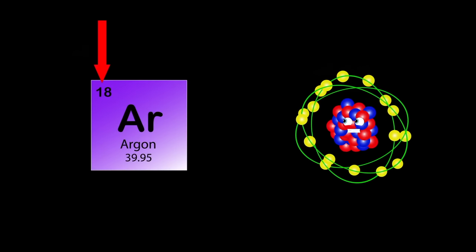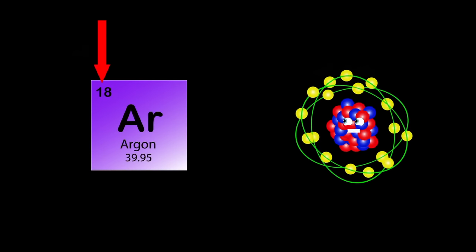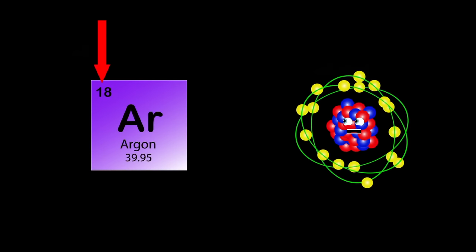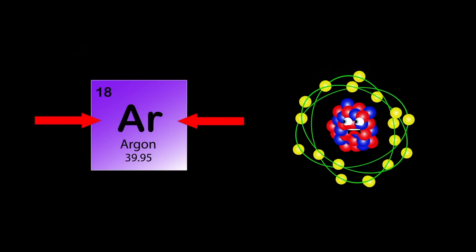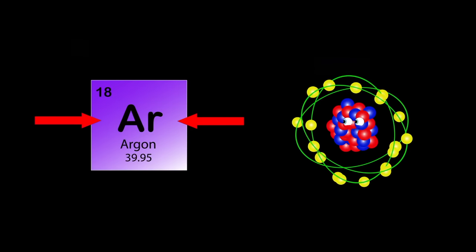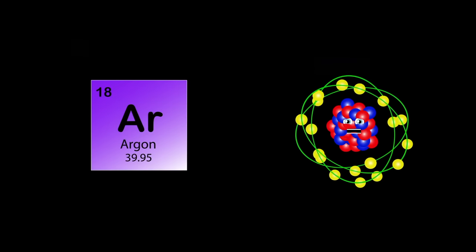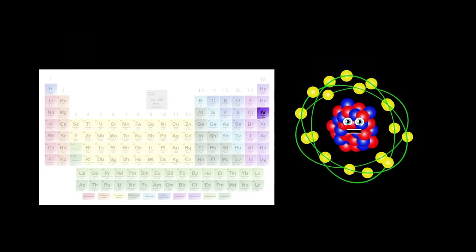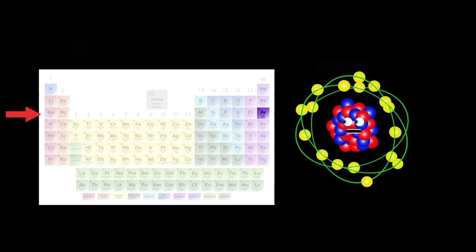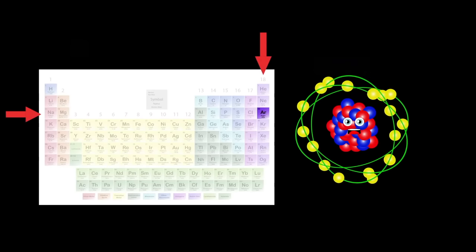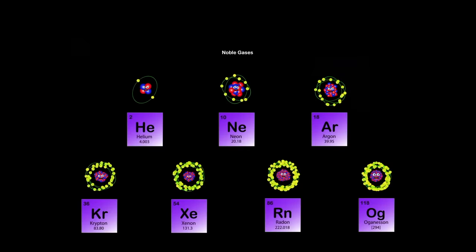I am Argon. My atomic number is 18, my atomic mass is 39, my symbol is Ar. Argon is often used when an inert atmosphere is needed. You can find me in period 3, group 18.